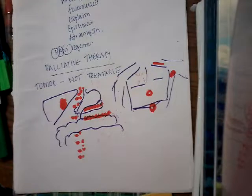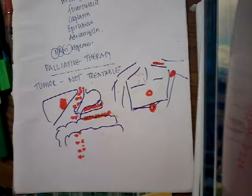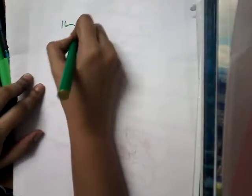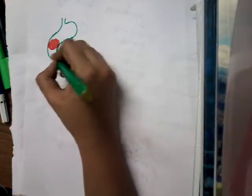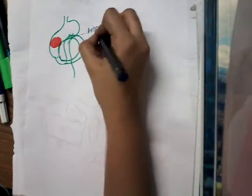In palliative therapy, the main aim is to relieve pain, relieve obstruction, and improve symptoms. If the tumor is obstructing the outflow of the stomach, anterior gastrojejunostomy can be performed — a jejunal loop is anastomosed to the stomach to bypass the obstruction.